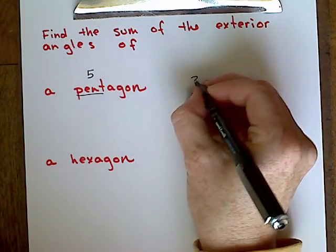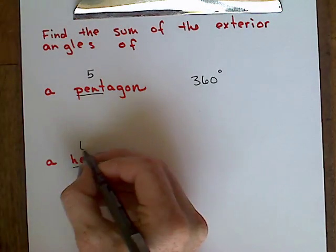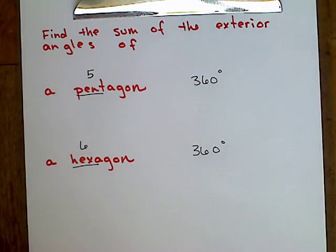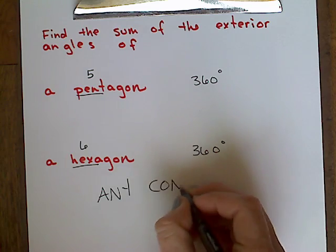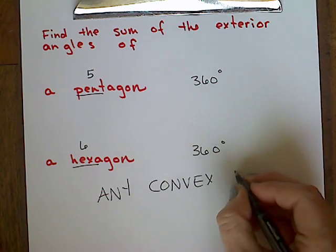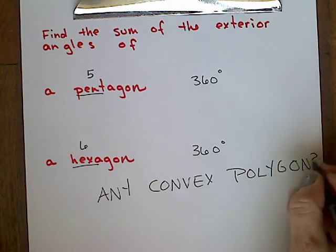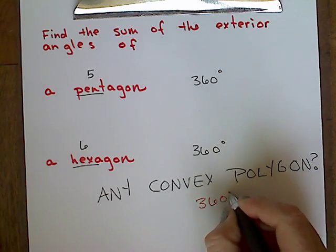So let's do a couple example problems just to see how this works. How about a pentagon with five sides? Well, the sum of the exterior angle measurements is going to be 360. How about a hexagon with six sides? Well, it's also 360. In other words, any convex polygon, doesn't matter how many sides it has, the sum of the exterior angle measurements is always going to be 360 degrees.